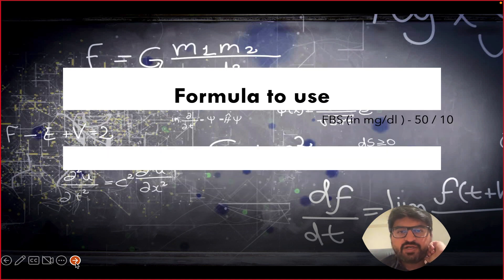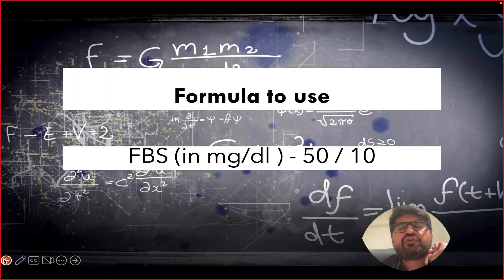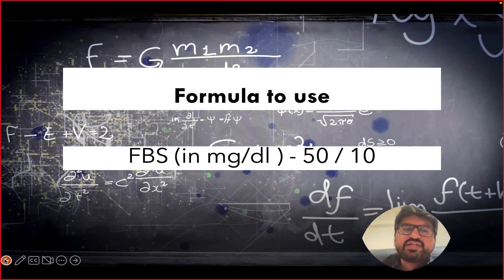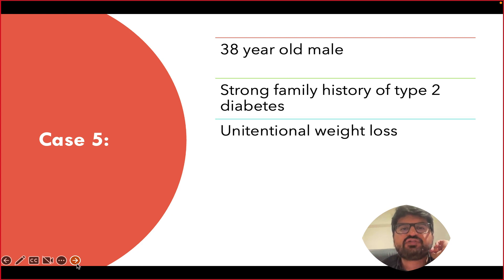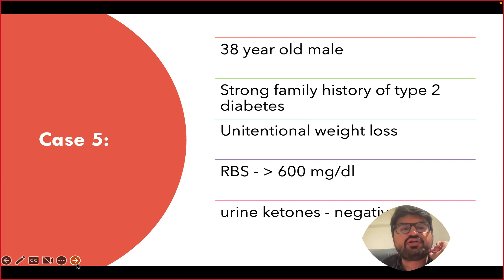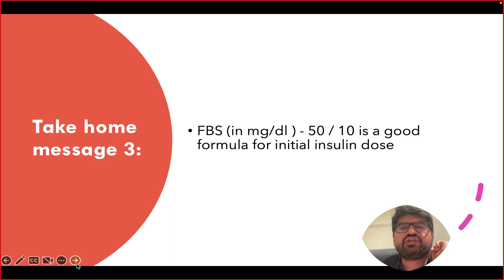For dosing, use the formula: fasting blood sugar minus 50, divided by 10. Many doctors initiate premix twice daily, but experts suggest starting once daily with the heaviest meal of the day, then escalating to twice daily. For example, a 38-year-old male with HbA1c 13%, random sugar 600, and negative urine ketones: applying the formula with a fasting around 300 gives a starting dose of approximately 24–25 units before dinner.